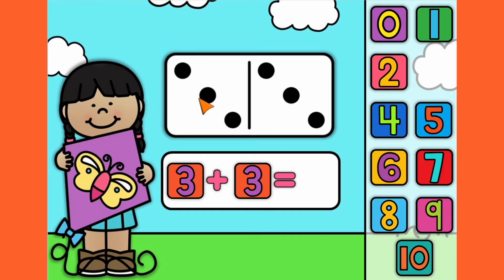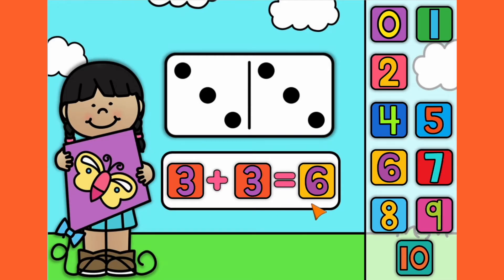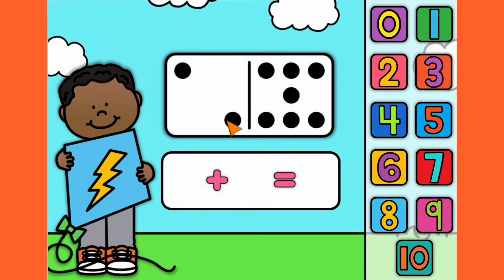Let's count them all together now. 1, 2, 3, 4, 5, 6. 3 plus 3 equals 6.